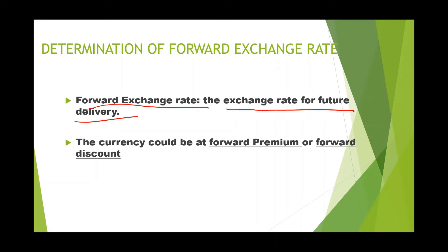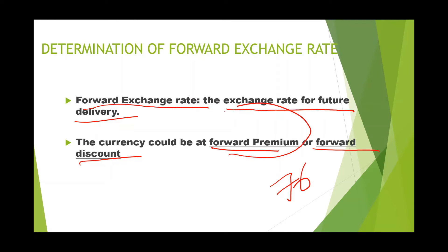The price could be a forward premium or forward discount. For example, if today the price of a dollar is 76 rupees, when you purchase the dollar next month it will not necessarily be 76 rupees — it could be more than 76 or less than 76. If you are purchasing the dollar for more than 76, it is a forward premium. If you are purchasing the dollar next month for less than 76, that is a forward discount.